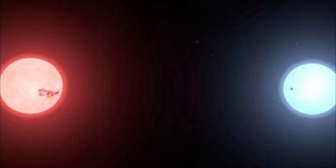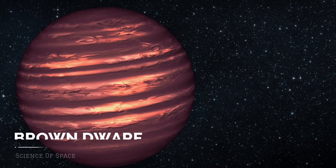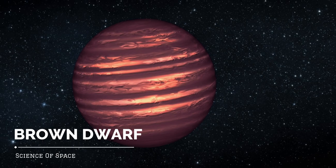The object is part of a double system and is a type of star known as a brown dwarf, which is essentially a failed star.